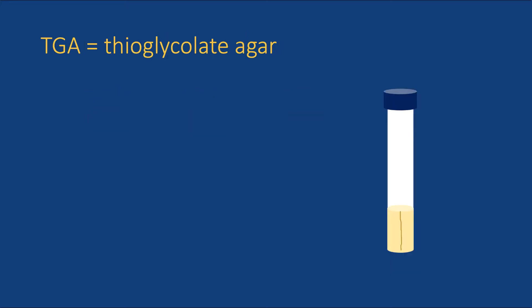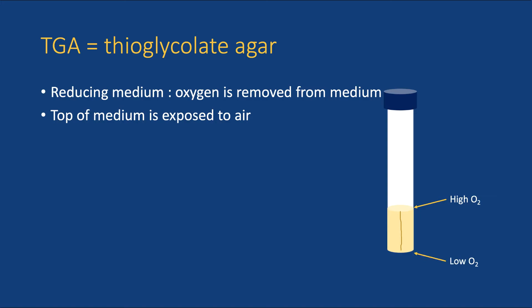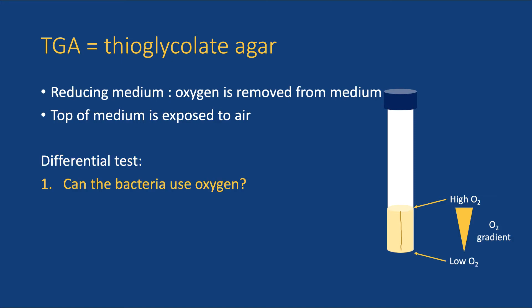TGA, or thioglycolate agar, is a reducing medium, which means in this case that oxygen is removed from the medium. The top of the medium is exposed to the air, so there will be oxygen there, but the deeper you go into the medium, the less oxygen there will be. At the bottom, there will be very little, if any, oxygen. This is a differential test that allows you to determine if the bacteria are capable of using oxygen, and if they are harmed by the presence of too much oxygen.